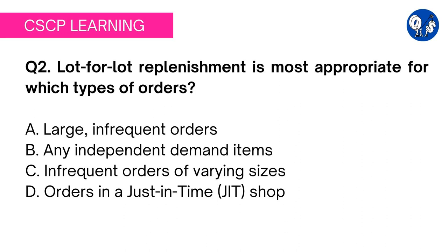Since lot-for-lot replenishment has nothing to do with the nature of the product, option B is not the right answer. Option C, infrequent orders of varying sizes, is also not the right option since lot-for-lot replenishment has nothing to do with the size or number of orders. Let's see what we have in option D.